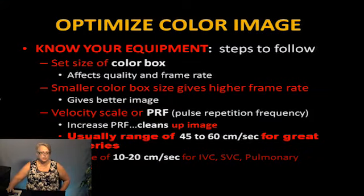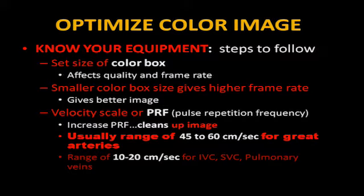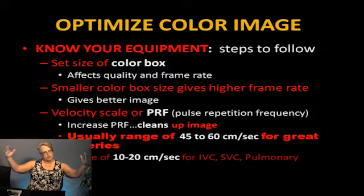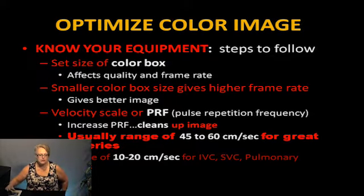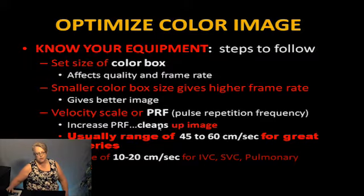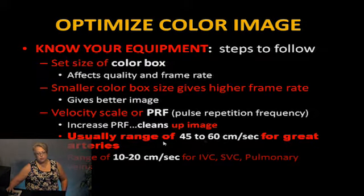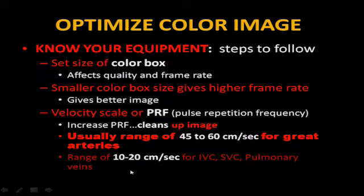Optimize your color image and know your equipment. Changing your sector width increases frame rate — if the sector width is open wide, there are bigger gaps between lines of information; compressing it gives more information in that space. Smaller size gives a higher frame rate, and a higher frame rate gives a better image. For velocity scalar PRF: increase PRF to clean up your image when looking at high flow. The usual range for great arteries is 45 to 60 cm/s; for venous, drop it down to 10 to 20 cm/s — always adjust depending on the patient.